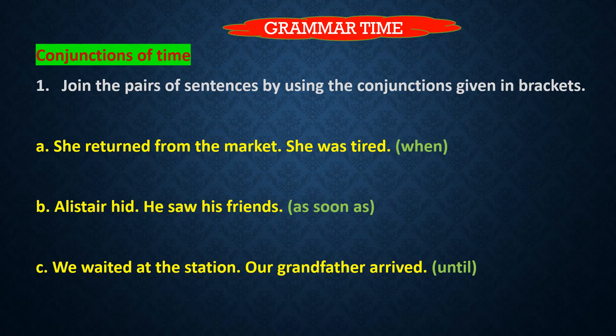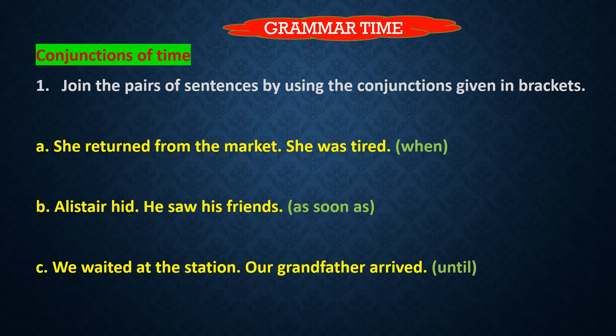Now the next exercise is Grammar Time, and the topic is Conjunctions of Time. What are conjunctions? Conjunctions are linking words — connectives, connecting words. And what are conjunctions of time? The conjunctions or joining words that tell us about the time of events or happenings are called conjunctions of time. So here we have to join the pairs of sentences by using the conjunctions given in the brackets.